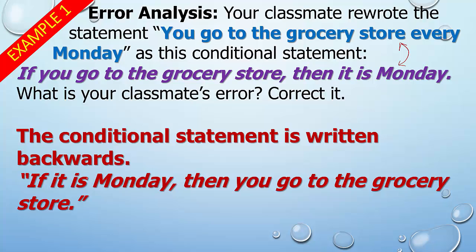So basically, you want to write it: 'If it is Monday, then you go to the grocery store.' It's not to say that you can't go another day, just that when it's Monday, you always go. Basically, if it says that you are doing something, that's usually the hypothesis. You want to make sure that's the second part that follows the 'then' statement. Could I say something where it goes in the same order? Sure — you're not always reversing it. It's just that whatever you do is usually because of something else — in this case, it's dependent on the day.